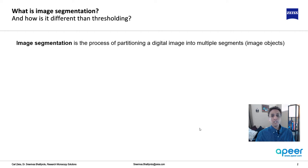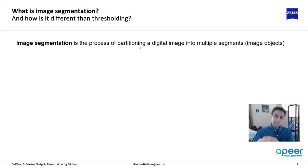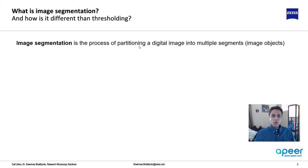We tend to use image segmentation and thresholding interchangeably, but there is a small difference. Image segmentation is a process of dividing or partitioning your image into multiple segments. For example, you have a nucleus, cytoplasm, or something else — you separate these pixels. Or if you're a material scientist or geologist with a backscattered image, you have regions like mineral 1, mineral 2, mineral 3, porosity, clays, quartz, or titanium alpha and beta phases. These are all image segmentation.